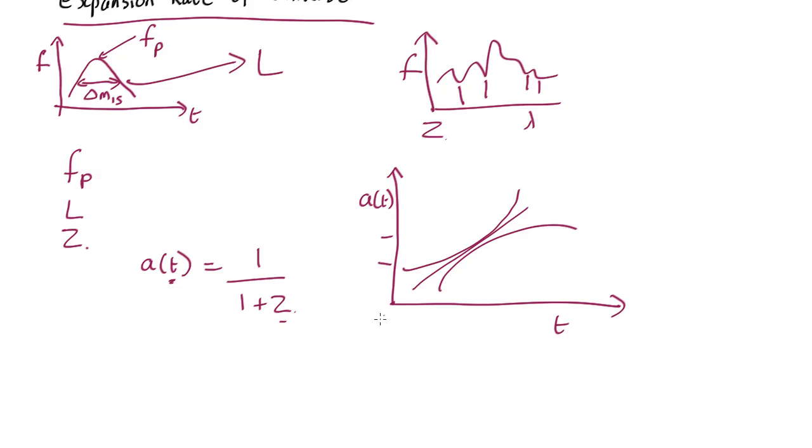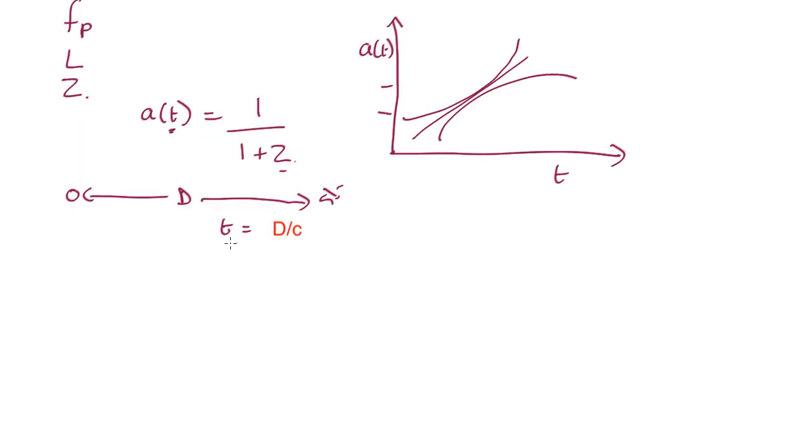Now, if we know how far away something is, so here's the Earth and here's your supernova, if we know the distance D here, then the time, how long the light's been traveling, is going to be distance divided by the speed of light. So that's time measured back from the present. If we say that this is the present day, it's this time here, measured backwards, which causes some confusion.